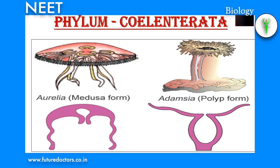Phylum Cnidaria: there are about 9000 species. The name Cnidaria is derived from the stinging cell. Cnidarians are exclusively marine forms. Examples: Obelia, Aurelia, Physalia, Metridium — but a few are fresh water. They have tissue grade organization and are diploblastic. A coelenteron or gastrovascular cavity is present, which is blind at one end and opens as a mouth or hypostome at the other end. The mouth is surrounded by thin, long, slender, hollow structures called tentacles.